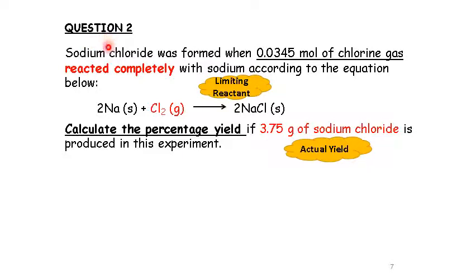Next question 2. Sodium chloride was formed when 0.0345 mol of chlorine gas reacted completely with sodium according to the equation below. So this question is more simple compared to question 1 because we no need to determine the limiting reactant. Because the key words reacted completely. Chlorine with sodium. So chlorine is the limiting reactant because it reacted completely. And then the equation is given. So you no need to write out the equation by yourself. But please double check. Is the equation balanced? Yes, this is a balanced equation.